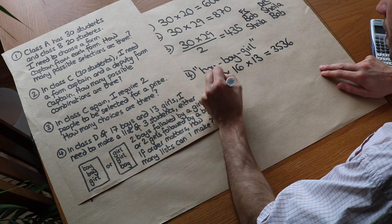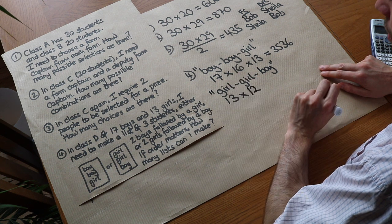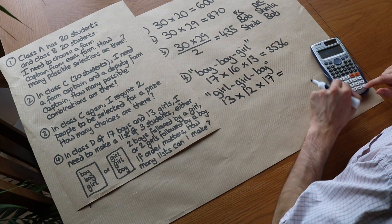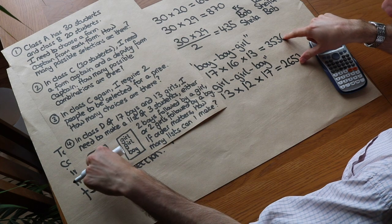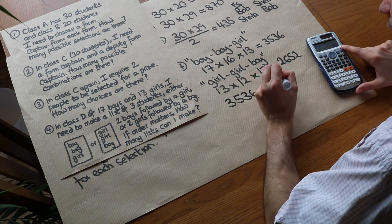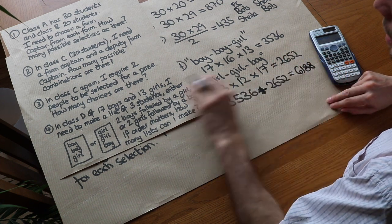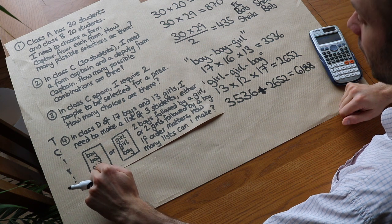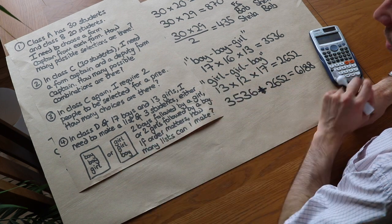For the girl-girl-boy lists: 13 choices for the first girl, 12 for the second, and 17 choices for the boy. That gives 13 times 12 times 17, which equals 2652. Now, since we can have these lists OR those lists, we add the two numbers together: 3536 plus 2652 equals 6188 possible lists. You might have seen the idea that 'or' means plus and 'and' means times — we use that in probability too. When it's boy and boy and girl, we multiply; when it's one type or another, we add.